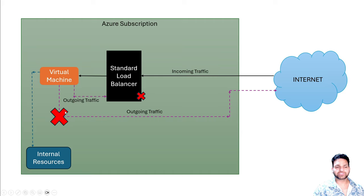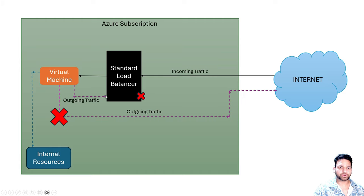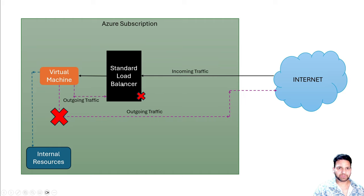The default system routes which send traffic from the virtual machine to the internet directly are overwritten by the standard load balancer. When the virtual machine sends outgoing traffic through the standard load balancer, there is no outbound rule defined by default. So the standard load balancer doesn't know what to do with that traffic and it blocks it.